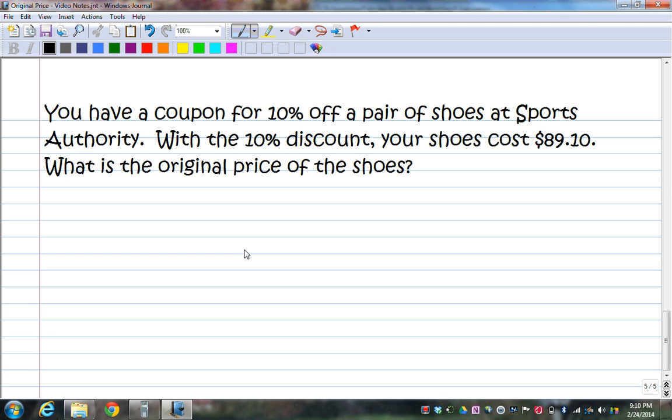You have a coupon for 10% off a pair of shoes at Sports Authority. Now, with that 10% discount, the shoes cost $89.10. What is the original price? Now, notice the 10% is written twice. That doesn't mean you add it. It's just mentioned twice in the problem. It's a discount. So, you subtract it from 100%. 100 minus 10 is 90 over 100 is equal to the sale price, 89.10. And again, we're always solving for B.